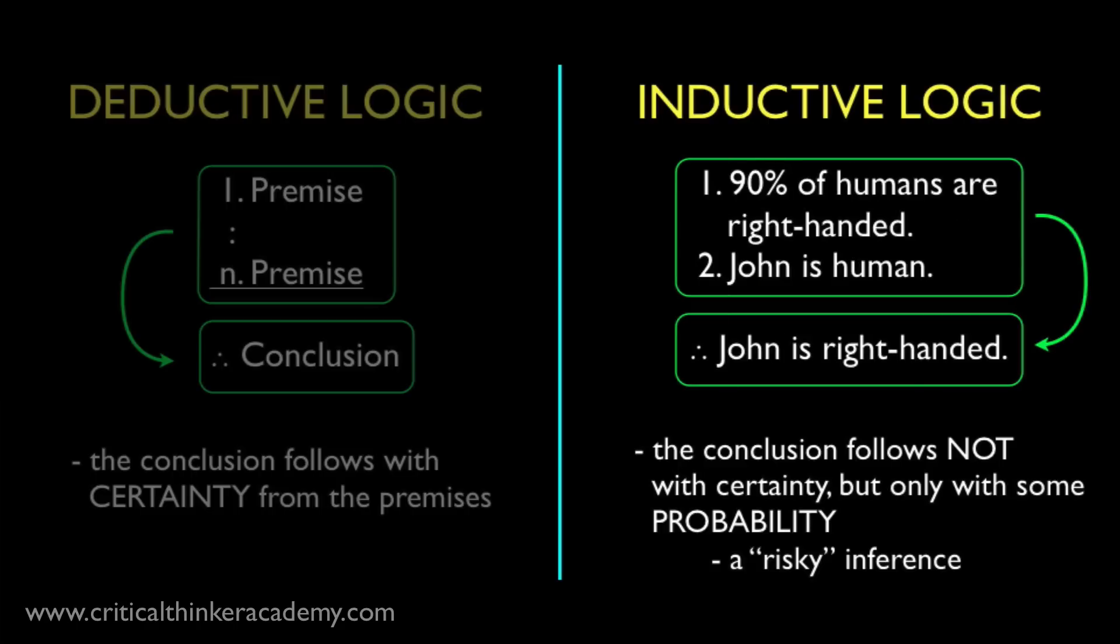Here's a simple example. 90% of humans are right-handed. John is human. Therefore, John is right-handed. This conclusion obviously doesn't follow with certainty. If we assume these two premises are true, the conclusion could still be false. John could be one of the 10% of people who are left-handed.